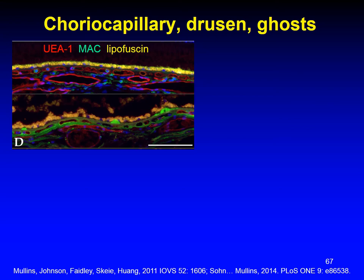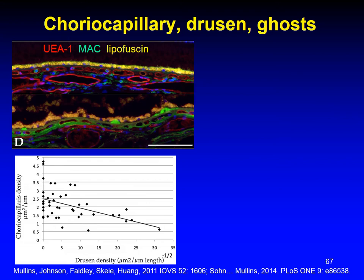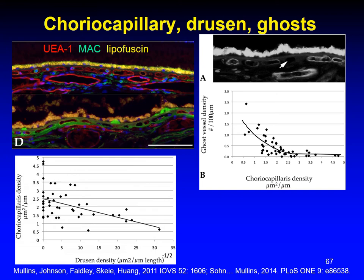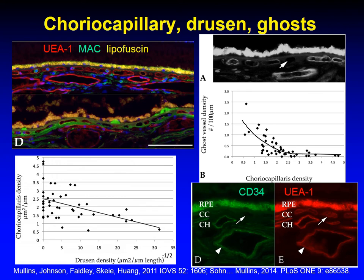Continuing along the layers, what is happening to the choriocapillaris? The membrane attack complex accumulates and UEA1 lectin binding disappears, indicating that the choriocapillary endothelium disappears. Loss of choriocapillaris occurs in conjunction with drusen load, because there are more ghost vessels — spaces below Bruch's membrane where vessels have occupied. Here is loss of the specific marker CD34 before the vessel itself disappears, indicating non-functional endothelium.